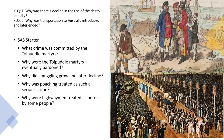Hello Year 9. Following on from your lesson about the Tolpuddle Martyrs and smuggling, you're going to look at two key learning questions today: why was there a decline in the use of the death penalty, and why was transportation to Australia first introduced and later ended? To start with, pause the video and have a chance to answer the SAS starter questions which recap on last lesson.